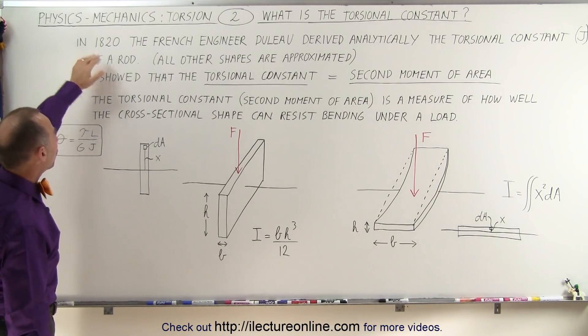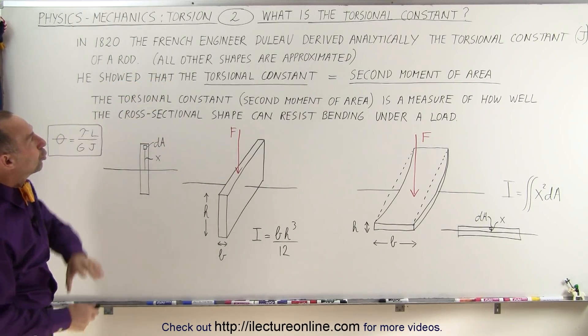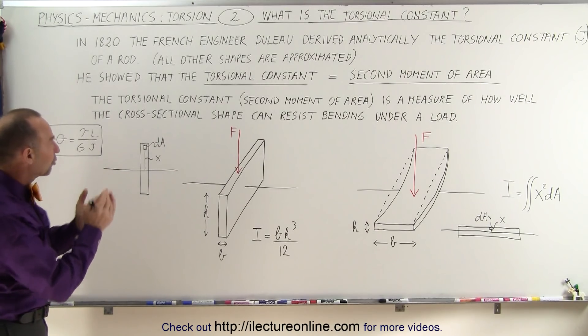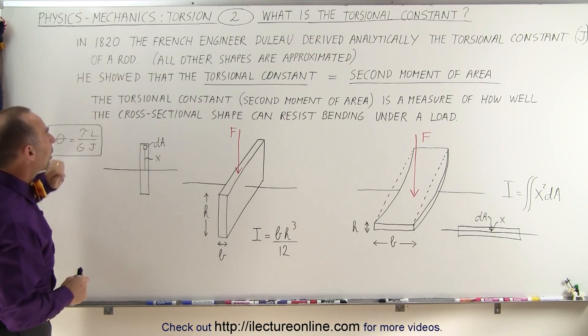It does definitely depend upon the shape of the object. Back in 1820, the French engineer Duleau derived analytically the torsional constant, which we use the letter J for, of a rod.